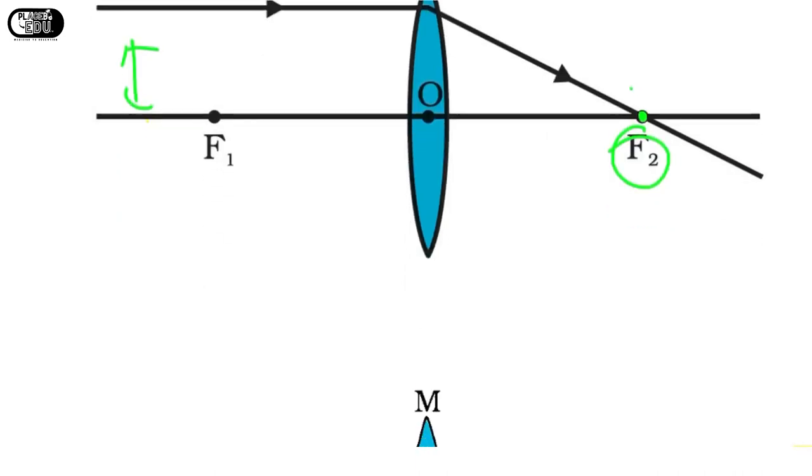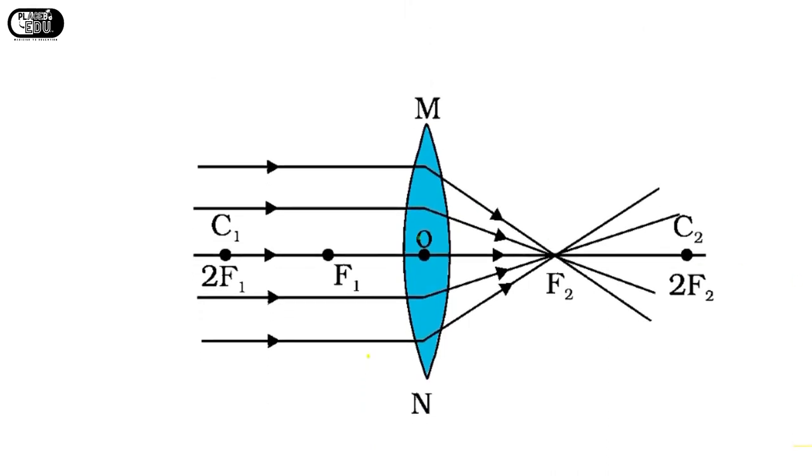So combining all the three rules, the original sunlight which will come in different directions will be refracted such that all the rays will converge at F2.